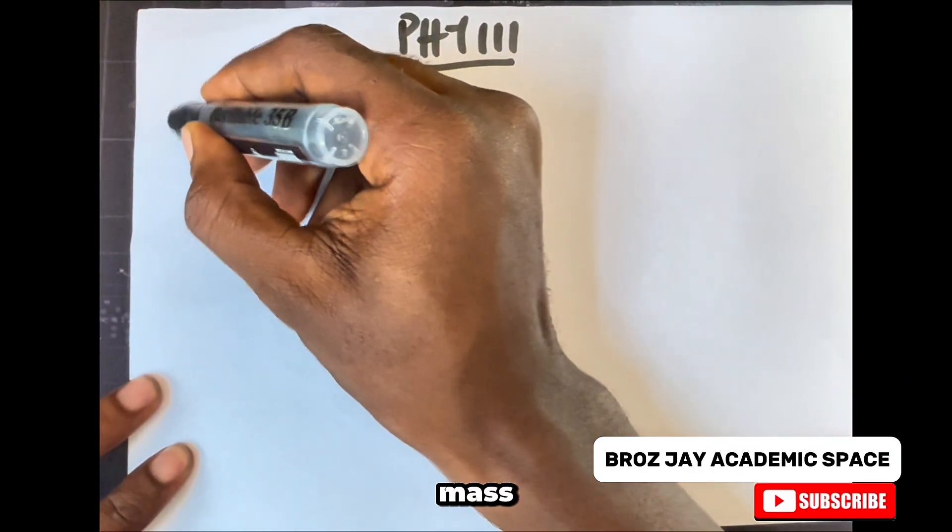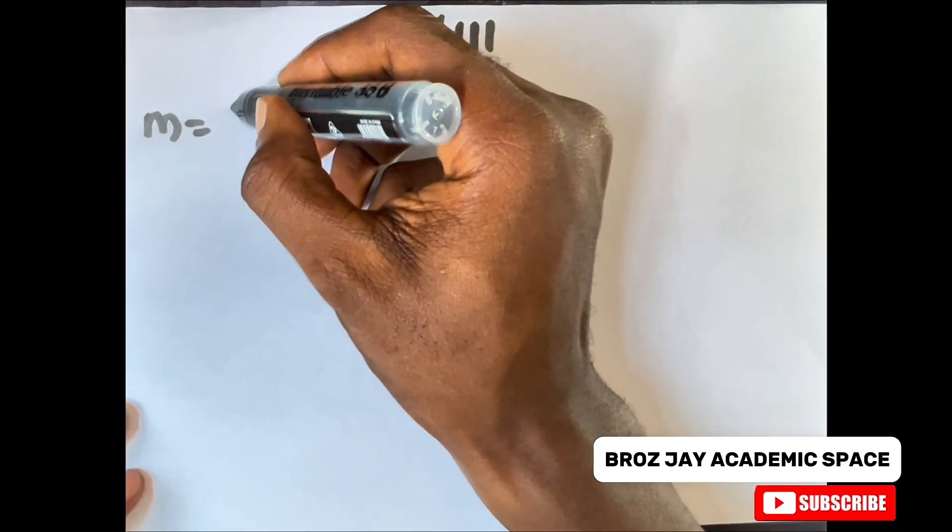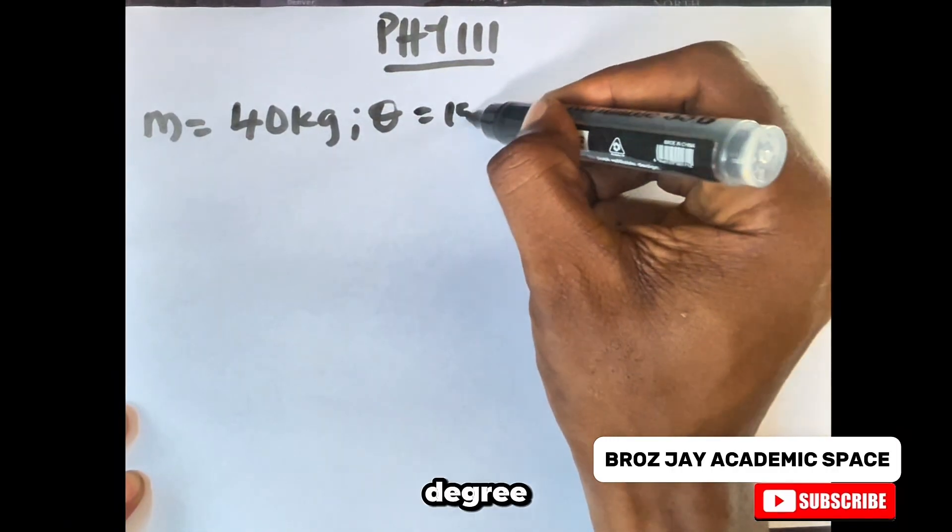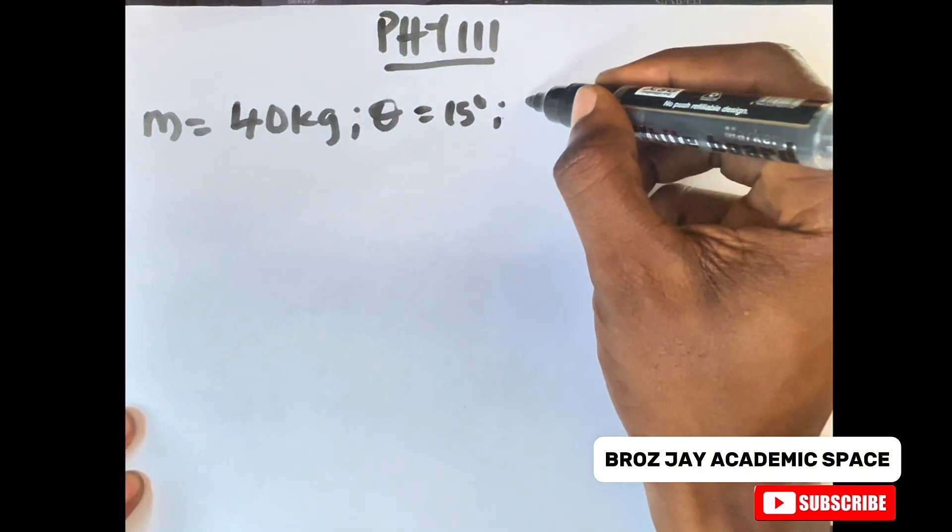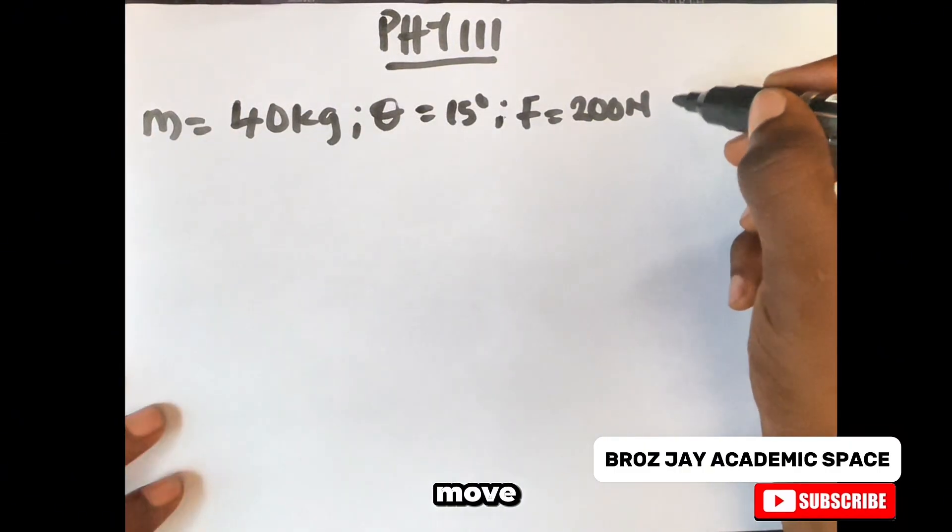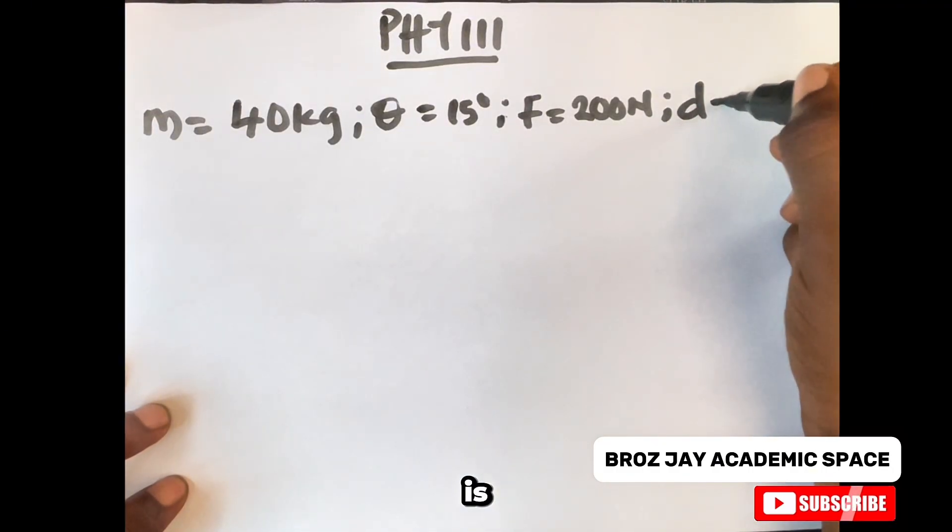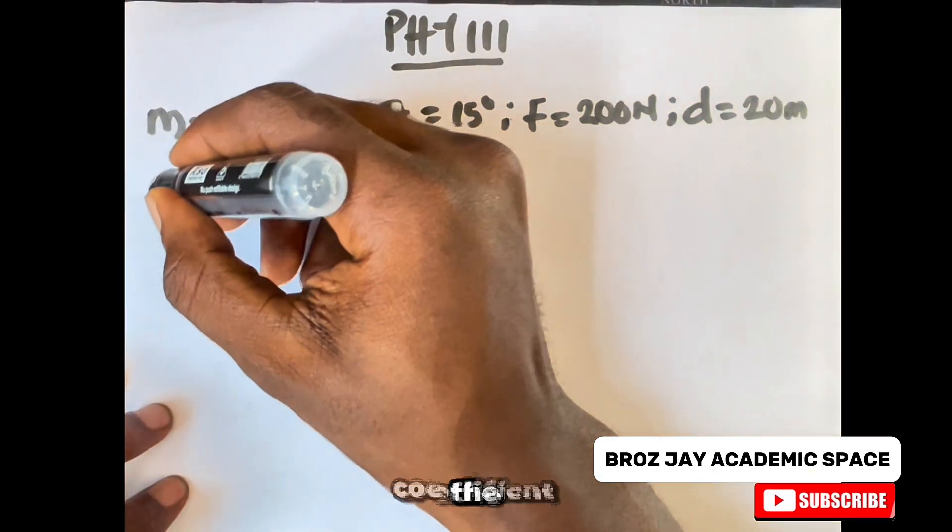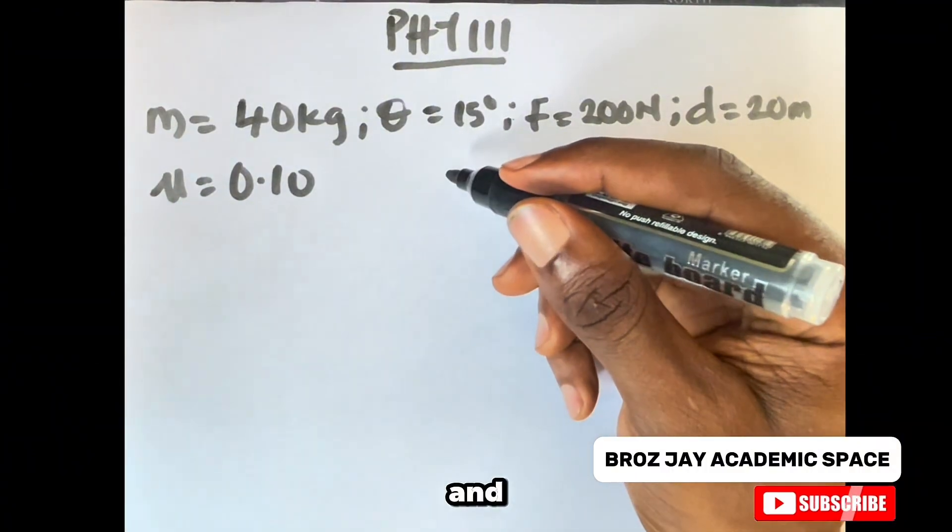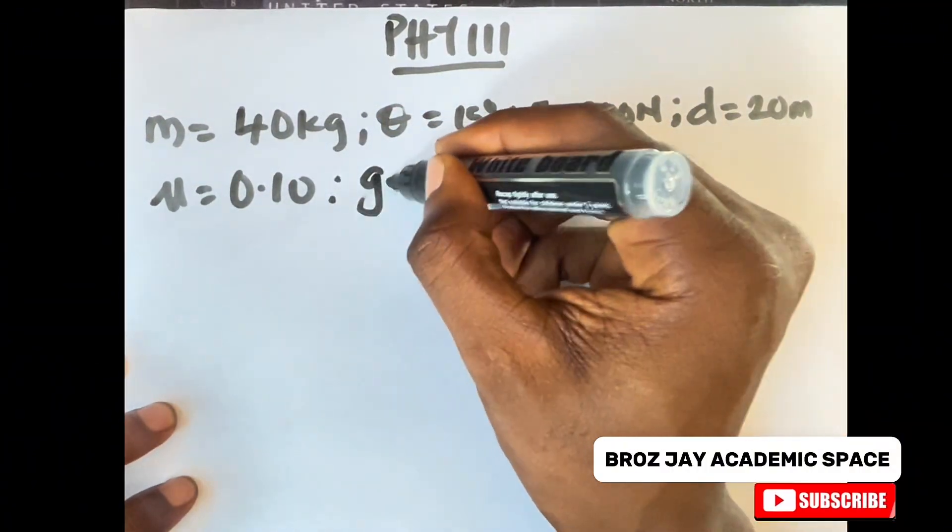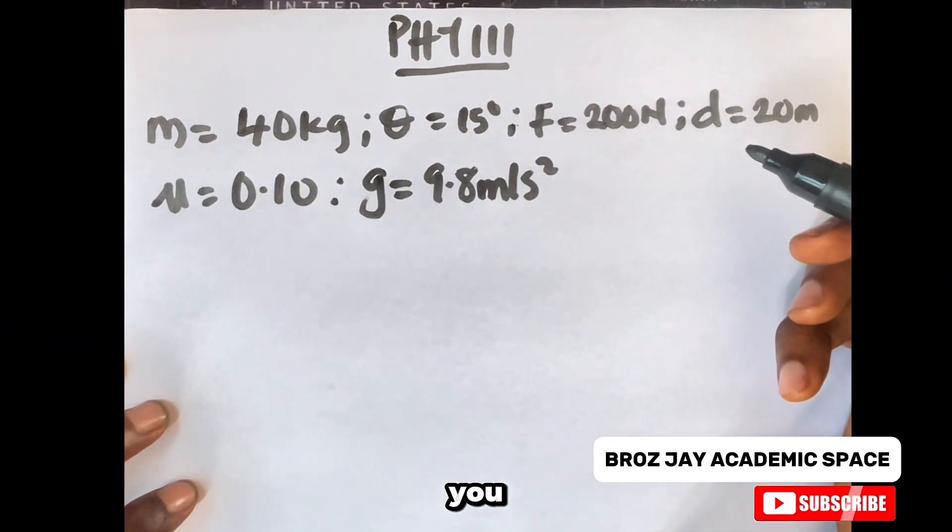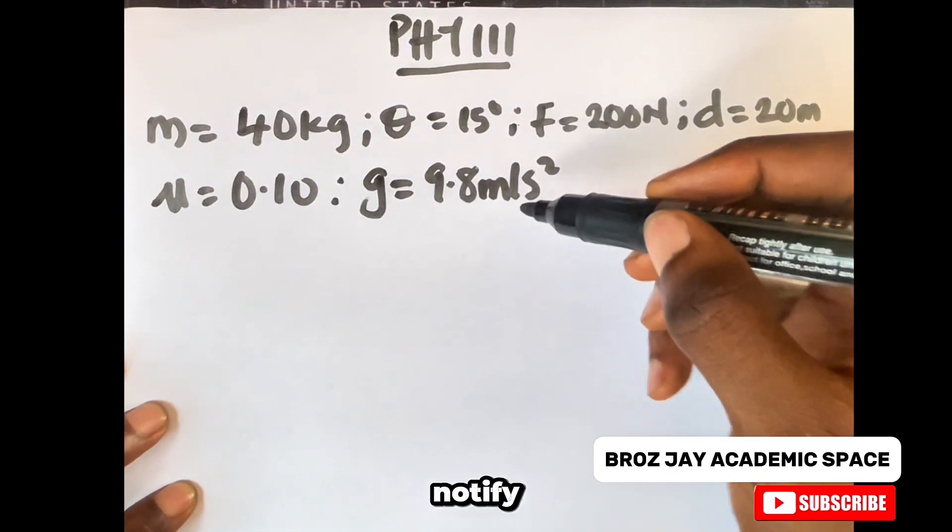We are given the mass M equals 40 kg, the incline angle equals 15 degrees, the horizontal force is 200 N, the distance moved along the plane is 20 meters, the coefficient of friction is 0.10, and let's take g to be 9.8 meters per second squared. You know you can take it to be 10.0 since you are not given which one to use, you are still correct. Just make sure you notify it when solving.